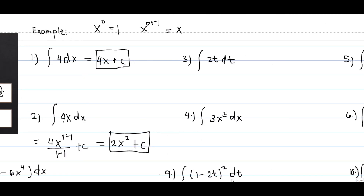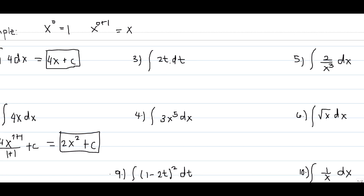The next example, number 3, is the same as example number 2. We have the exponent of t equal to 1, so we compute 1 plus 1 over 1 plus 1 plus c. That gives 2 over 2, which is 1. Therefore, the answer is t squared plus c. That is the final answer.